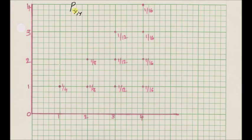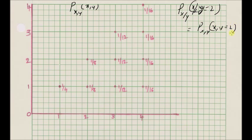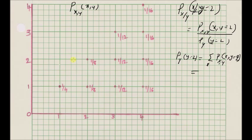Now, given the joint probability mass function, we want to find the conditional probability mass function of X given Y = 2. To find this, we compute the ratio of the joint PMF P_{X,Y}(x, 2) divided by the marginal PMF of Y at y = 2. The denominator is found by adding all the joint PMF values along the line y = 2 for all values of x, which gives us 13/48.